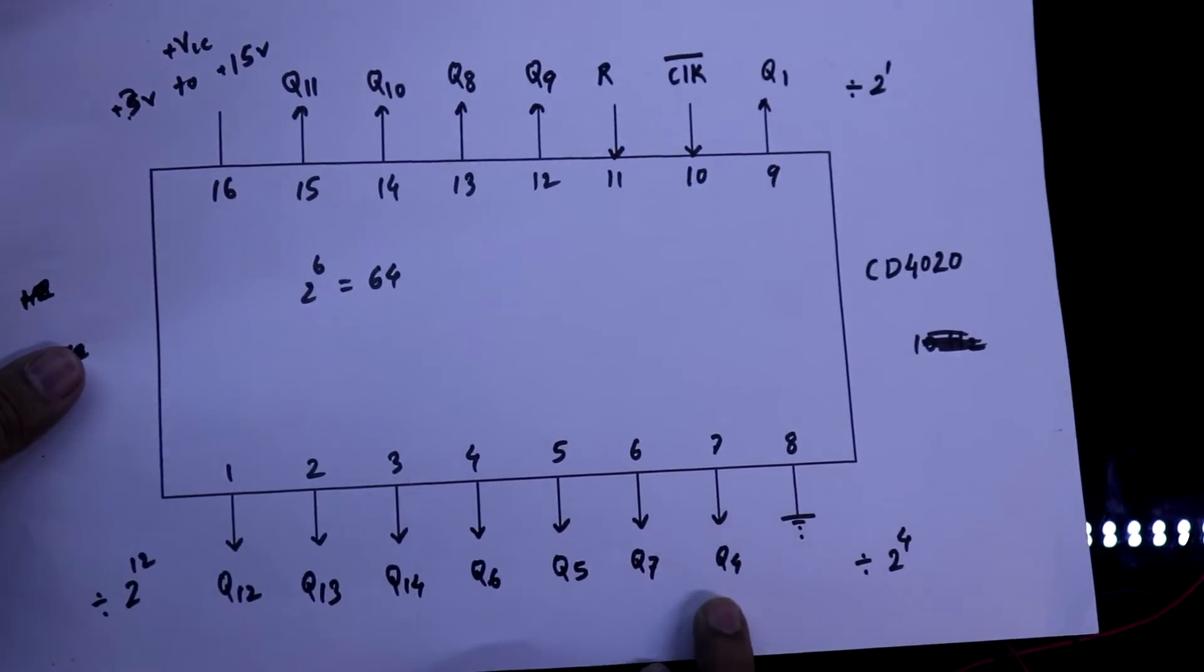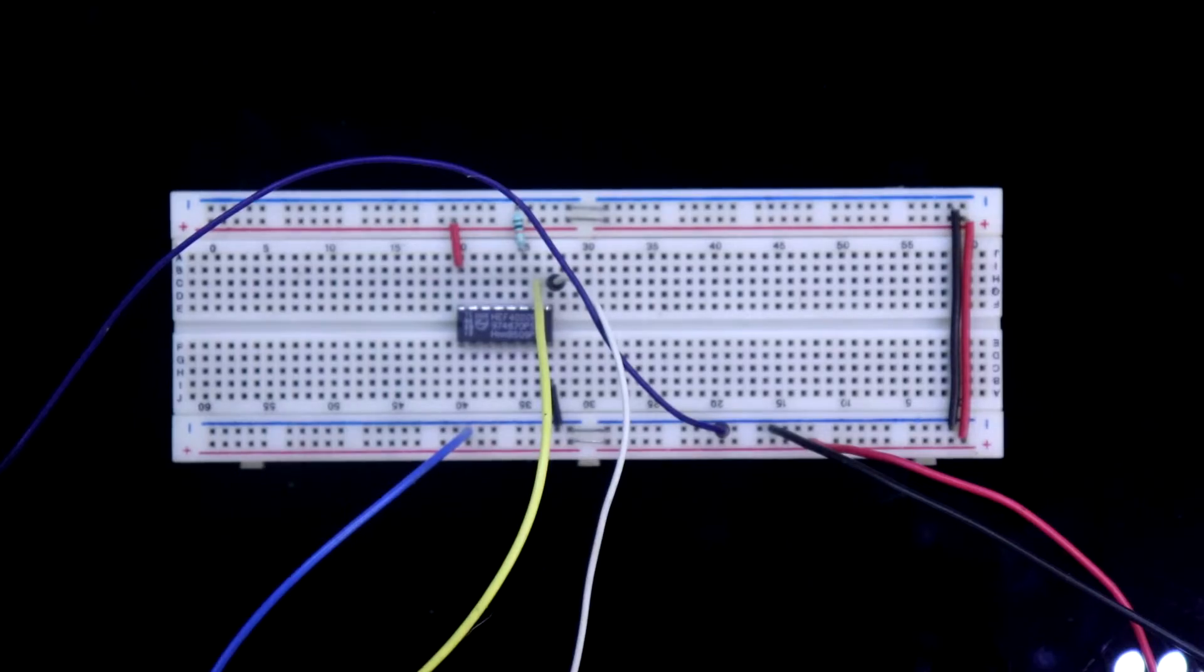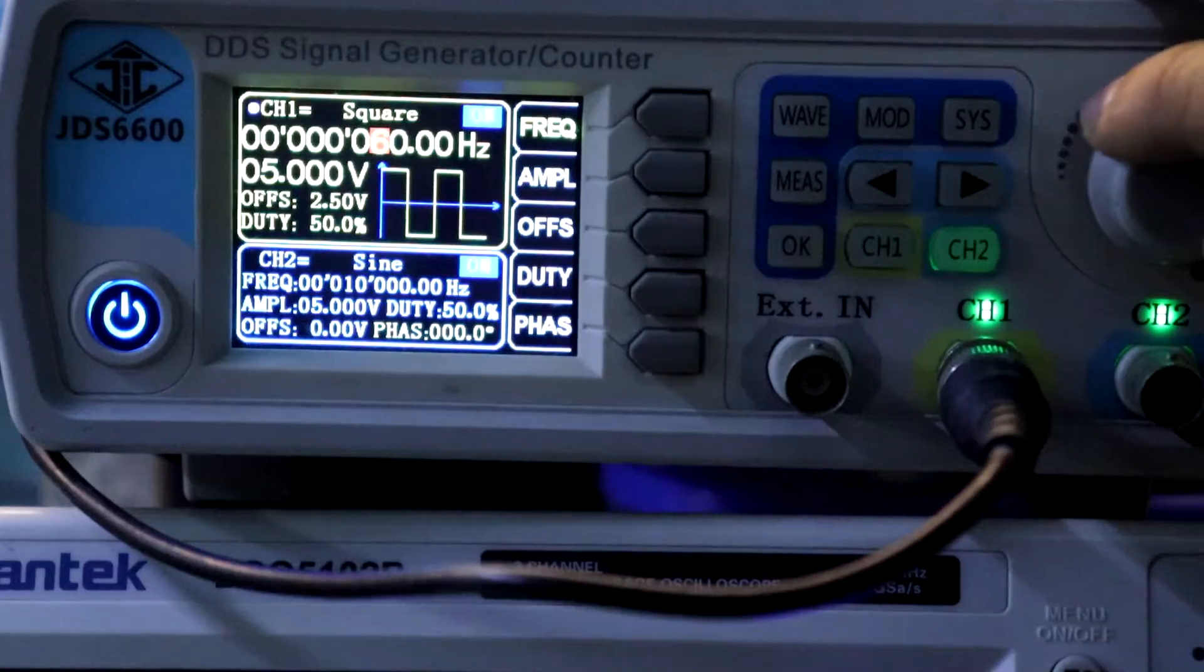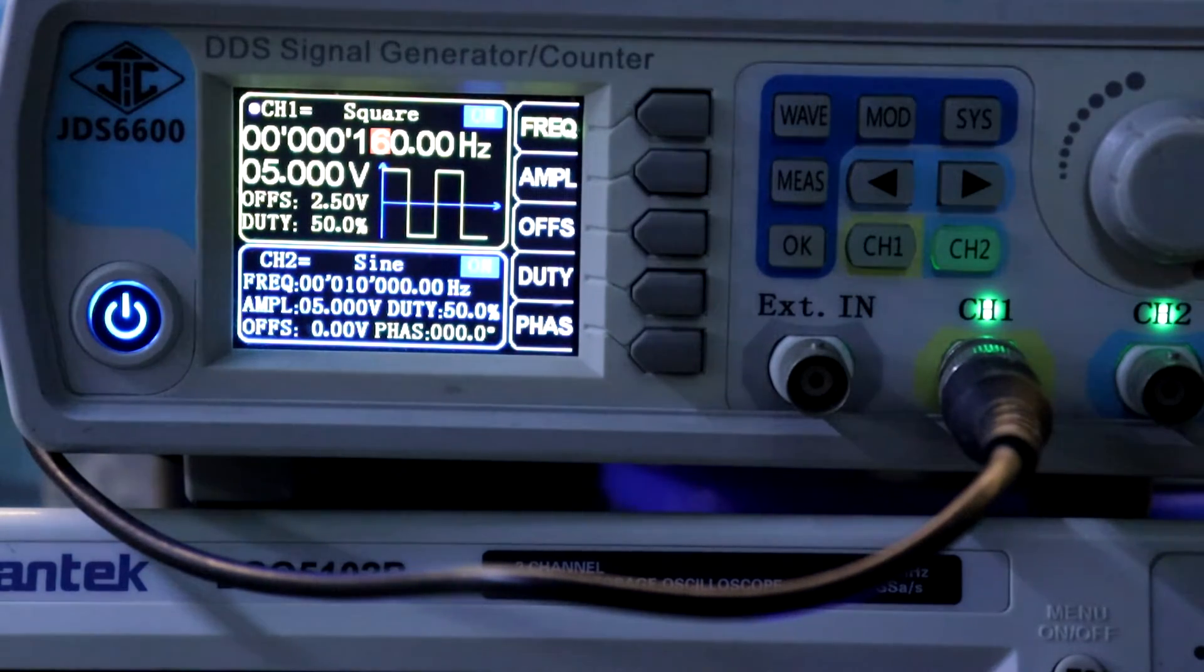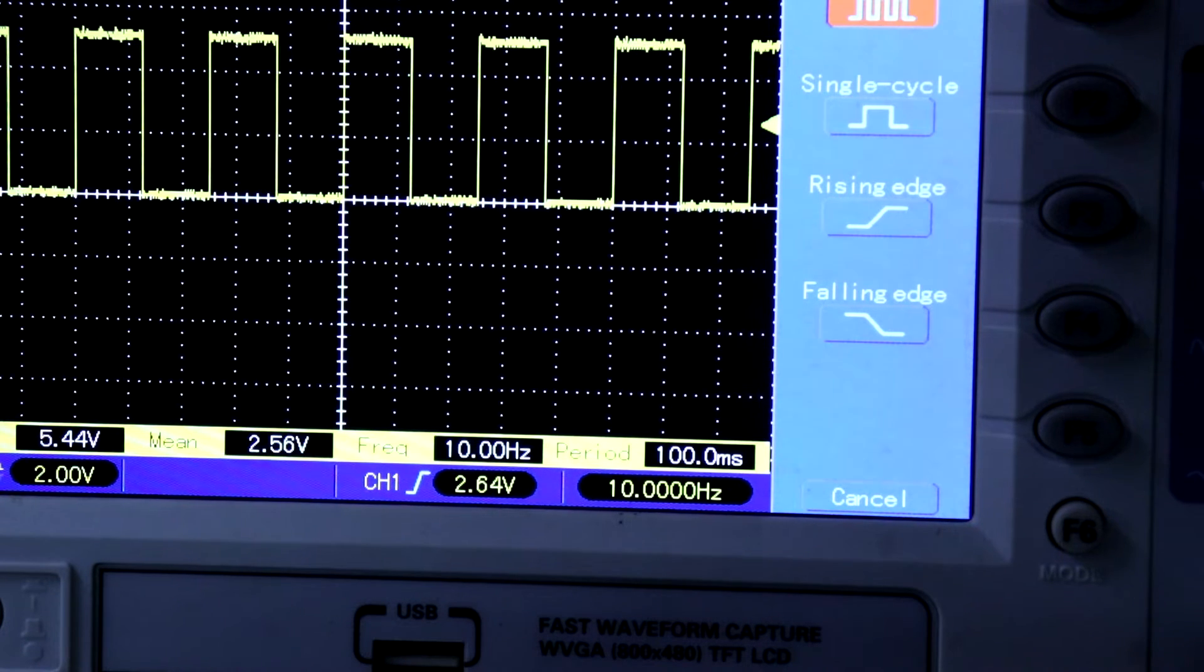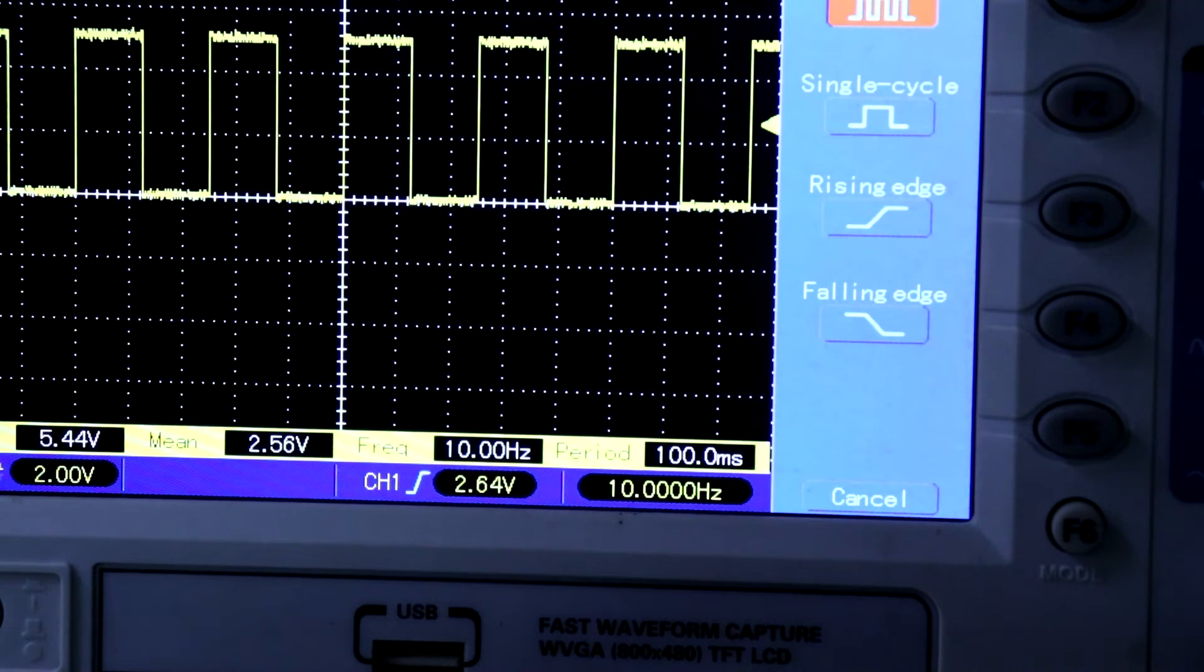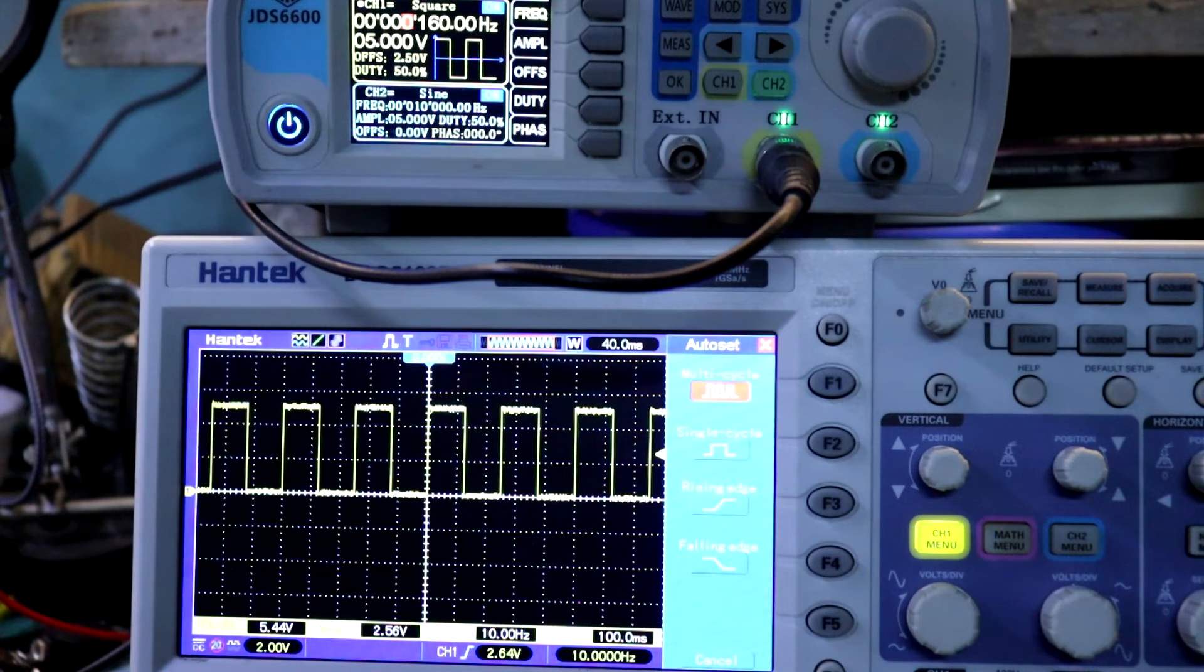Pin number 7 is Q4. 16. So what I will do is, I will connect my oscilloscope to pin 7. The input frequency is now 160 hertz. Here you are getting 10 hertz. It means 160 by 16 equal to 10. So this is how the frequency divider IC working. And now you can easily calculate the other pins also. Just you have to divide the input frequency with pin value.